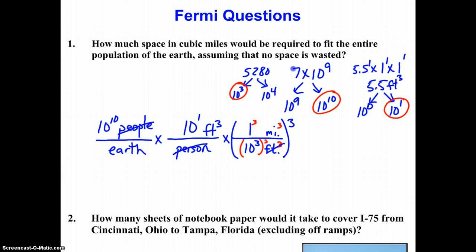I believe we're all set. So 10 to the cubic feet crosses out cubic feet there. And we have our population of the Earth converted to cubic miles. This is easy. Now all we have to do is a power of 10 calculation. So we have 10 to the 10th times 10 to the 1st over 10 to the 3rd cubed, which would be 10 to the 9th. That would be 10 to the 11th divided by 10 to the 9th. 11 minus 9 is 10 to the 2nd.